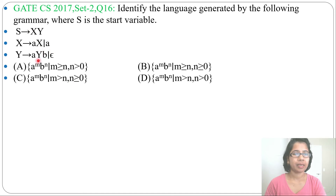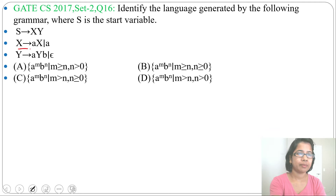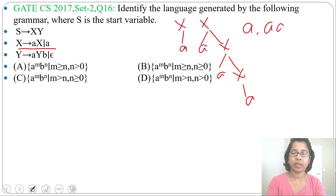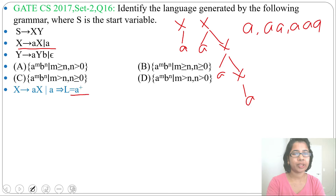Let's analyze the grammar. I will first analyze the X production. From X, you can derive AX or A. From X you can derive A, then AX, then AAX, and so on — you can derive minimum 1 A, then 2 A, then 3 A. You can generate any number of A's. The regular expression for this is A-positive closure, so minimum string is one A.